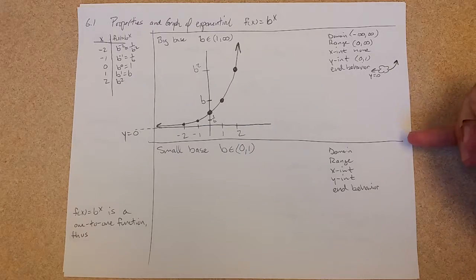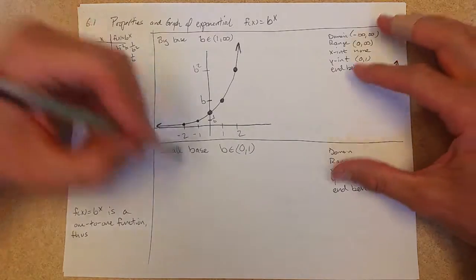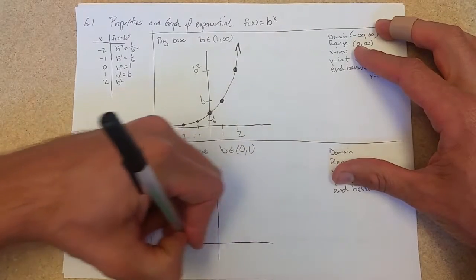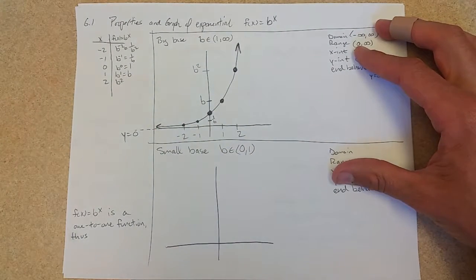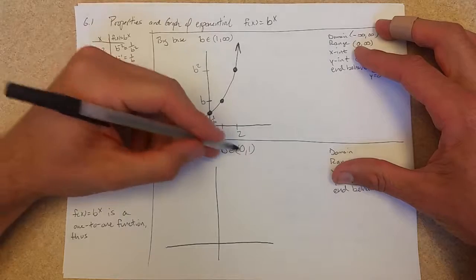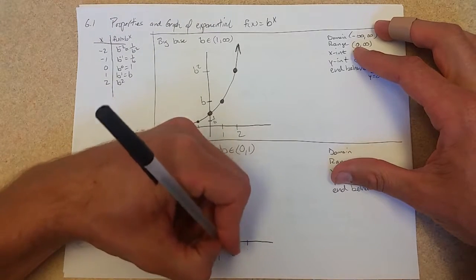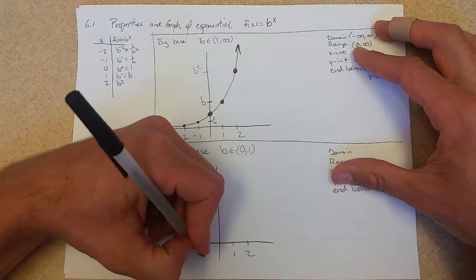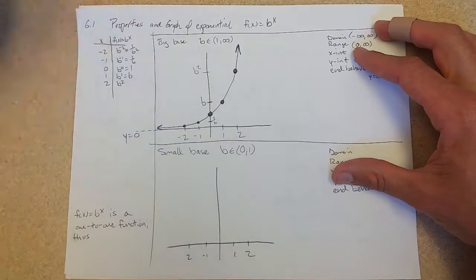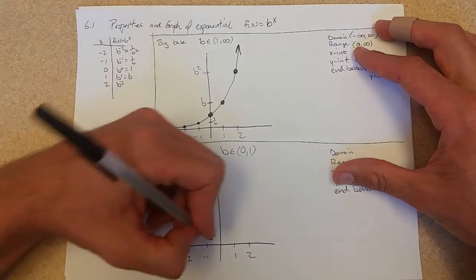Now a small base, how is that different? Well, again, I'm just going to pick a b-value. I'm going to pick a half, just a nice easy number between 0 and 1. So either way, b to the 0 is 1, same point right there.